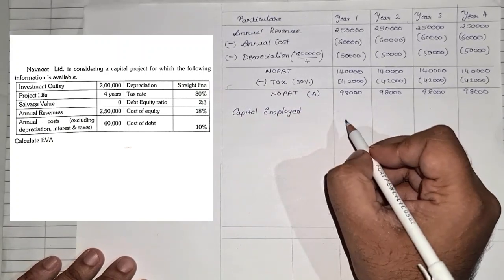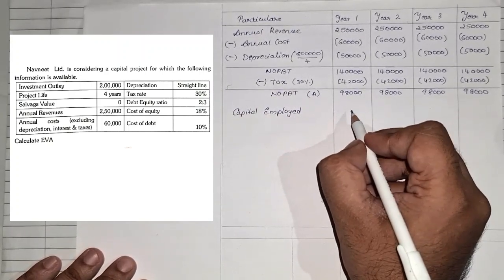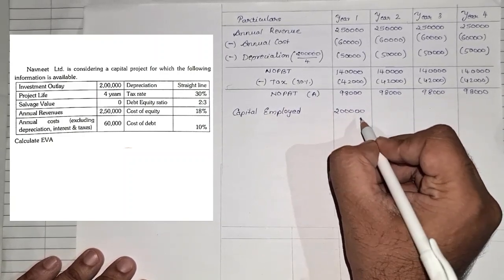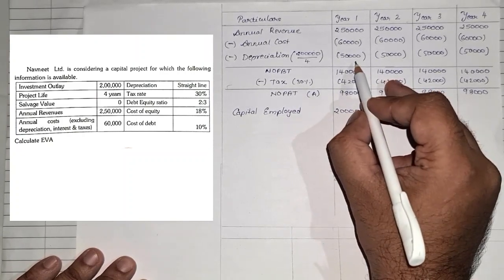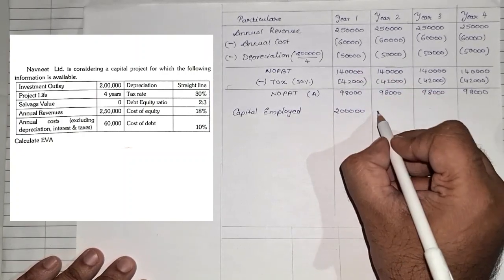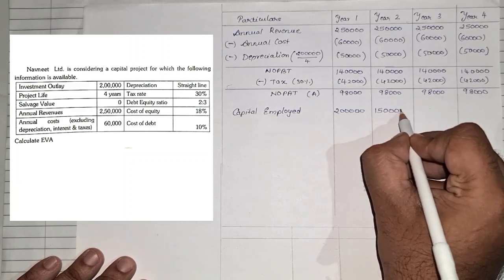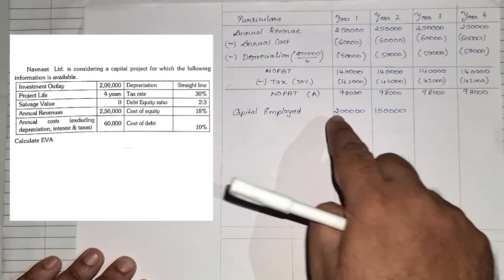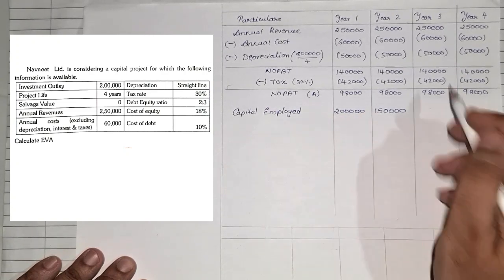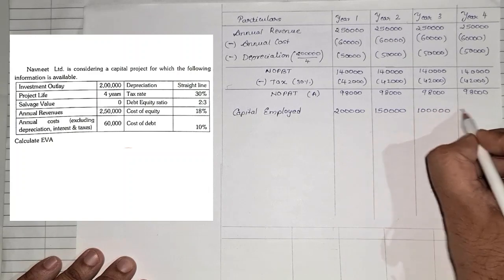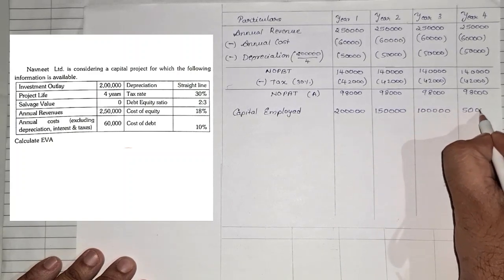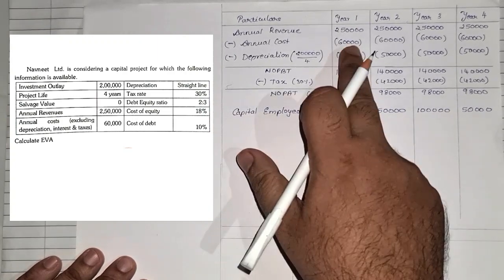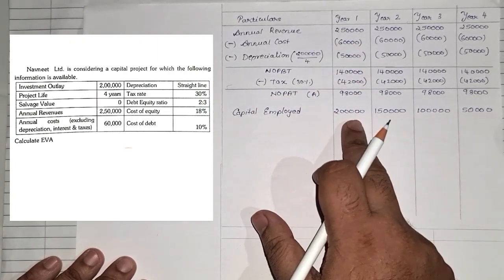Capital Employed reduces each year as depreciation is deducted from the original investment. Year 1: 2,00,000; Year 2: 2,00,000 − 50,000 = 1,50,000; Year 3: 1,50,000 − 50,000 = 1,00,000; Year 4: 1,00,000 − 50,000 = 50,000. This is very important — the capital employed decreases by the depreciation amount every year.